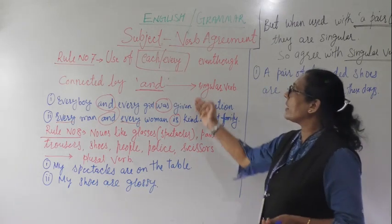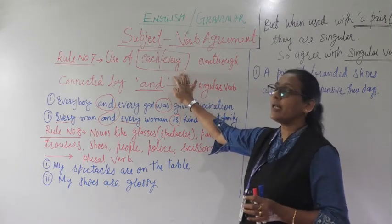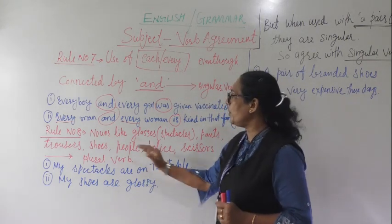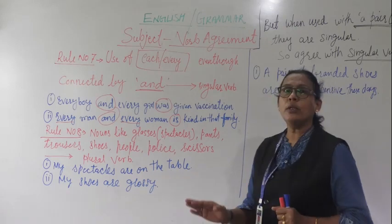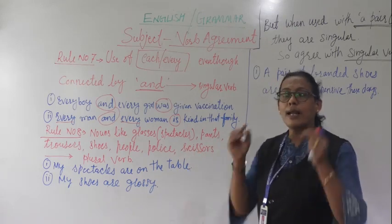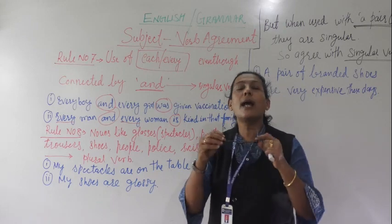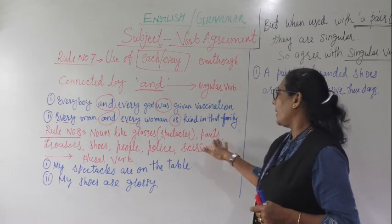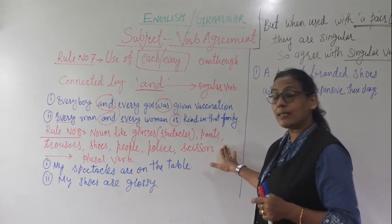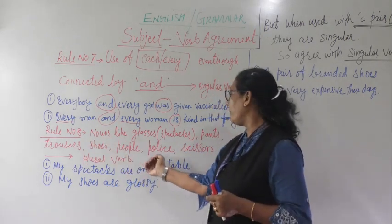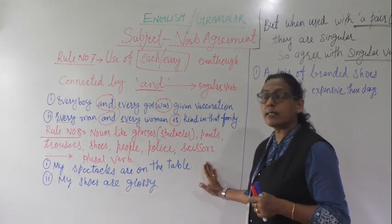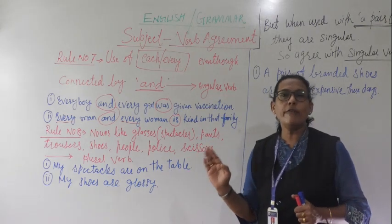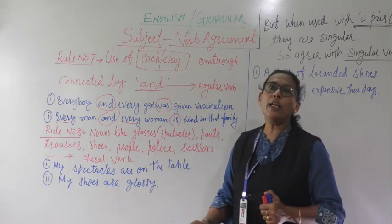Now we go to rule number eight. Rule number eight is about nouns like 'glasses,' 'pants,' 'trousers,' 'shoes.' These are collective nouns. Also 'people,' 'police,' 'scissors' — these nouns always take a plural verb.